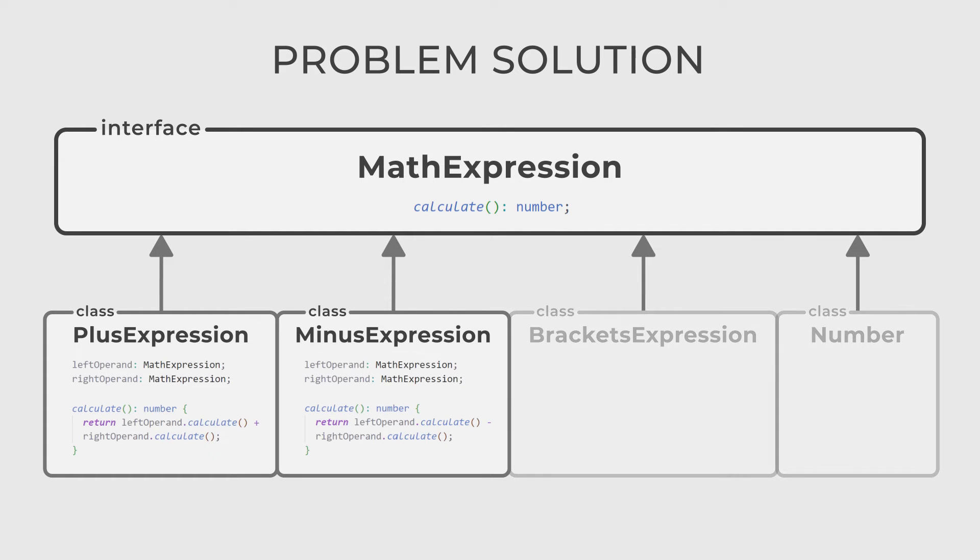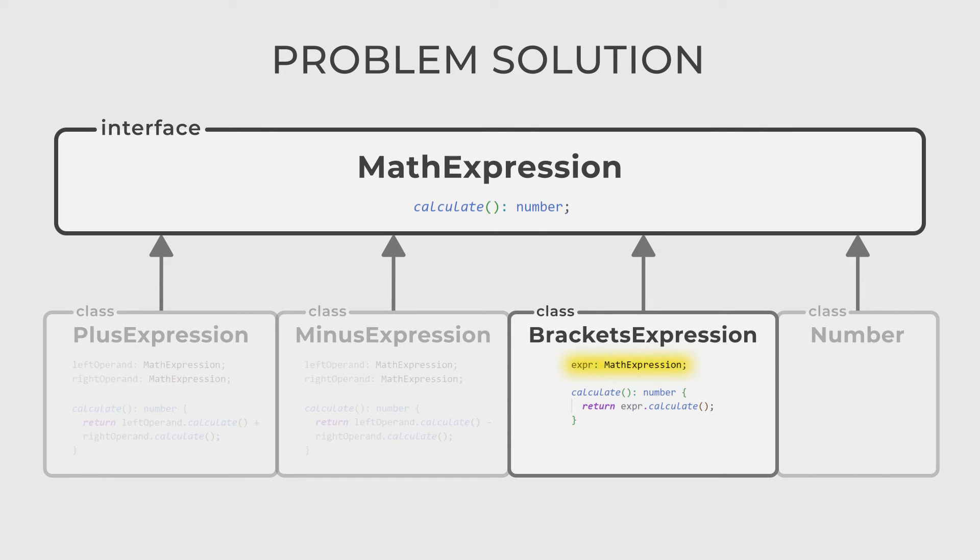The first two classes will contain two math expressions because each of those classes is a binary operation. That is, we need two operands to perform our action correctly. Their calculate function calls the evaluation on both math expressions and then returns their addition or subtraction. The bracket expression class contains one math expression and is used to group multiple math expressions into one. Its evaluation method returns the result of the calculate method of its single math expression.